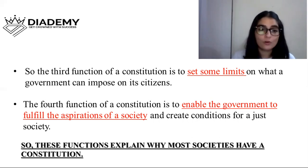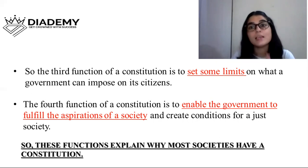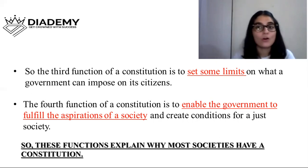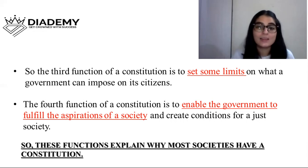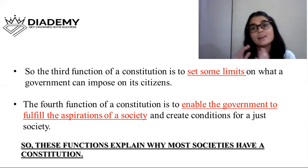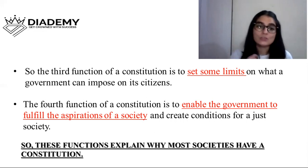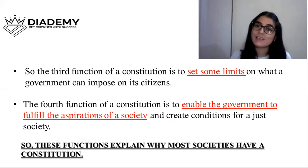The fourth function of a Constitution is to enable the government to fulfill the aspirations of a society and create conditions for a just society. For example, DPSPs are mentioned in our Constitution — one says there should be equal pay for men and women. Fundamental rights also have provisions for socially and educationally backward classes. These provisions enable the government to create a just and progressive society.